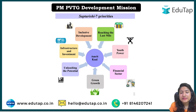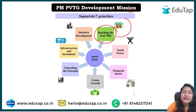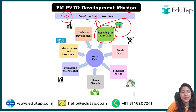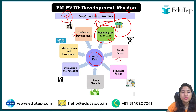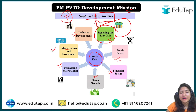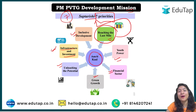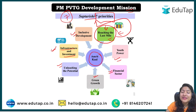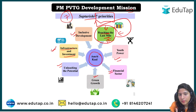This mission has been launched under the 'Reaching the Last Mile' category, which is part of the Saptarishi — seven priorities set by the government under Amrit Kaal. The seven priorities are: Inclusive Development, Reaching the Last Mile, Youth Power, Financial Sector, Green Growth, Unleashing Potential, and Infrastructure and Investment. Under 'Reaching the Last Mile,' the aim is to provide all facilities to the most backward sections of society.